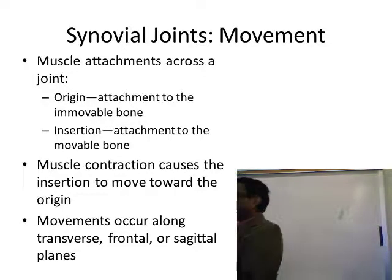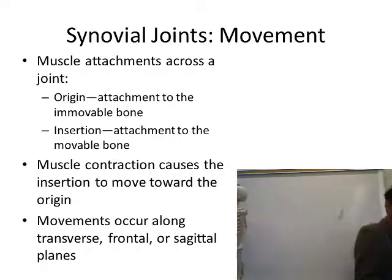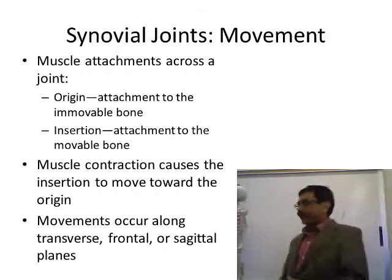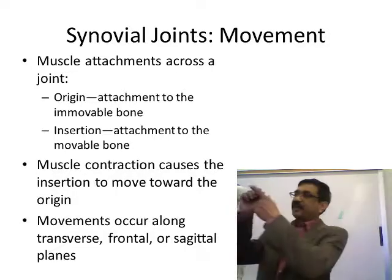Different types of movements occur in synovial joints. Gliding movement occurs when the surfaces of the bones are flat — the bones slide over each other. This is a small amount of movement, like what occurs between the carpal bones. The carpal bones are short, cubicle-shaped bones, and a gliding movement occurs between their flat surfaces.